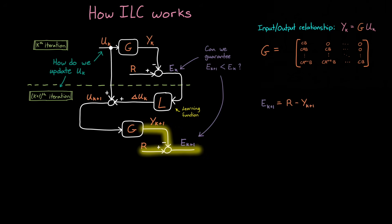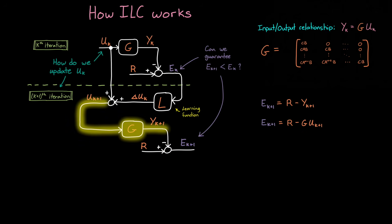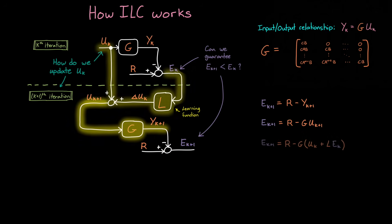e_k plus 1 is equal to r minus y_k plus 1, and then if we go back one step, y_k plus 1 is just g times u_k plus 1. And then if we go back one more step, u_k plus 1 is u_k plus l times e_k.